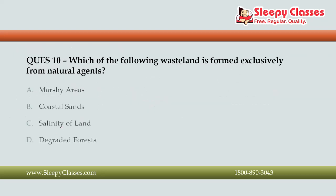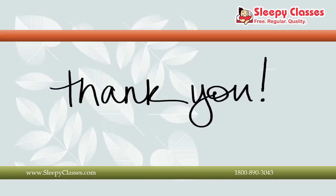The final question is: which of the following wasteland is formed exclusively from natural agents? Options are: A, marshy areas; B, coastal sands; C, salinity of land; D, degraded forests. Degraded forests are formed exclusively by humans, while coastal sands are formed exclusively by natural agents. So the correct answer is B, coastal sands. Thank you so much — we'll meet again with another session.